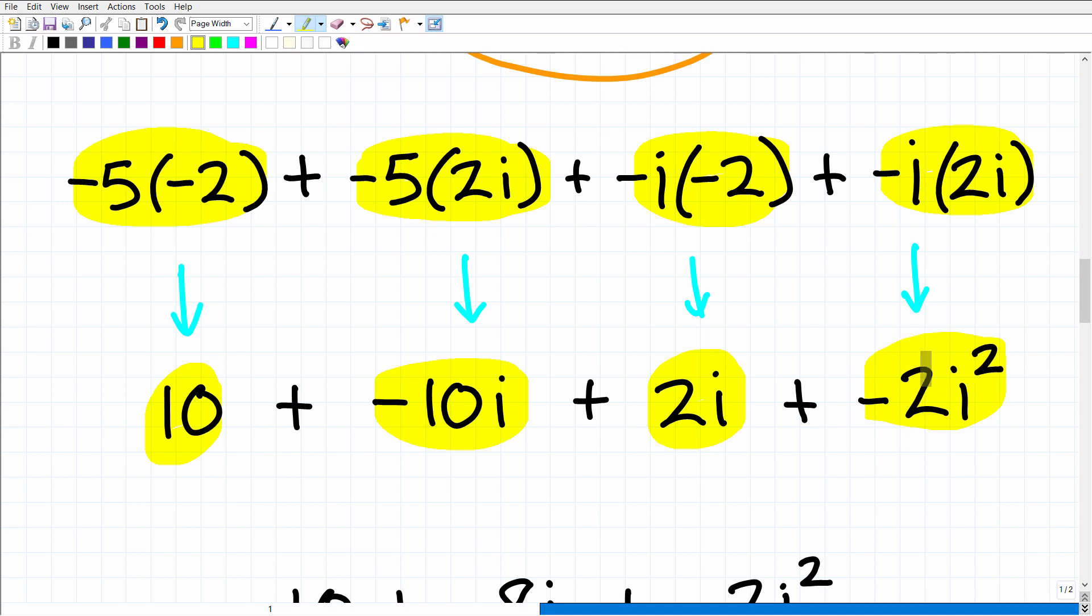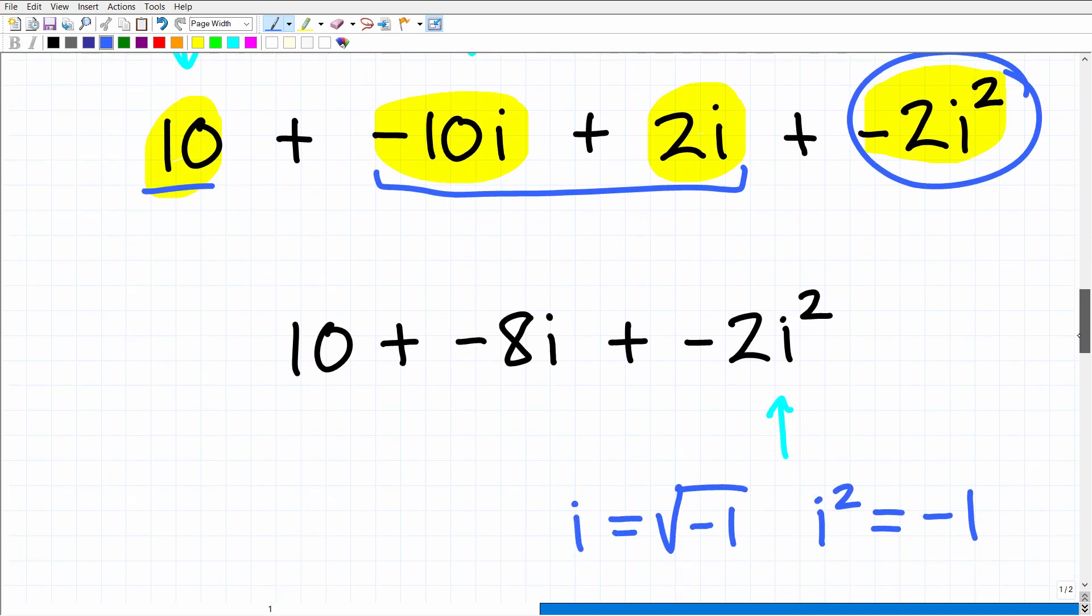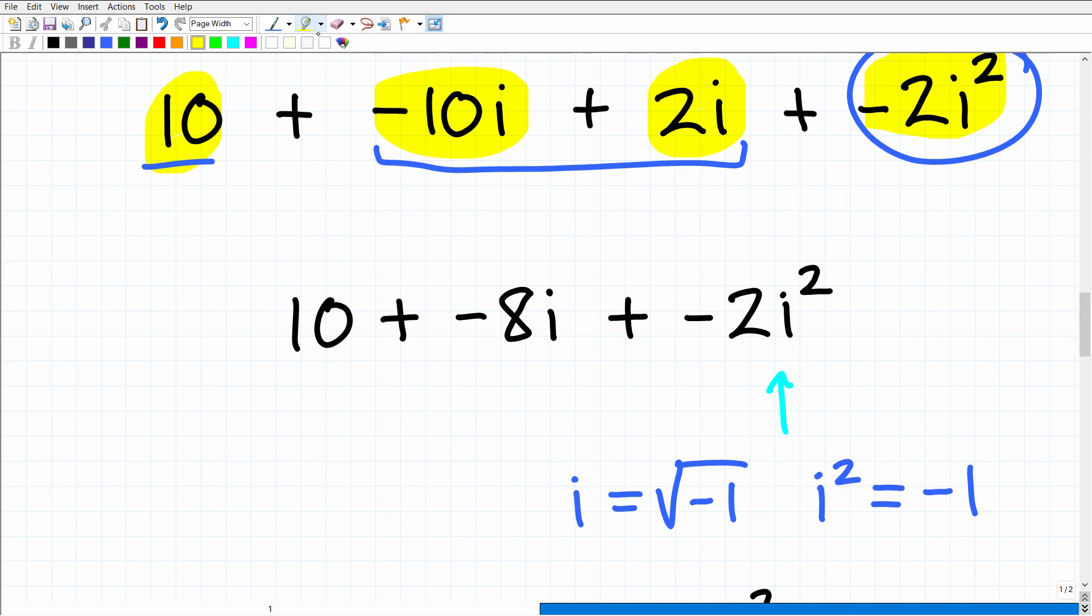At this point, you can see we have two imaginary numbers, so we can combine these here in a second. We have a real number. Now we have to figure out what to do with this. This is not that difficult. So the main idea here is that when you see i squared, we have to remember that by definition, an imaginary number is defined as i equals the square root of negative one. So if we square both sides, we can see that i squared is equal to negative one. So we're simply going to replace this i squared with a negative one.